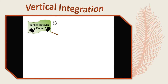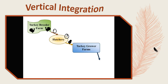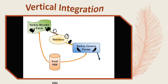The eggs are collected daily and shipped to the hatchery. The hatchery incubates the eggs until they hatch after 28 days. The baby turkeys, or poults, are delivered to the farmer who raises them until they are old enough and large enough to be processed for your dinner table. The feed mill makes the turkey feed that is delivered not only to the growing turkeys, but also to the breeder farms.